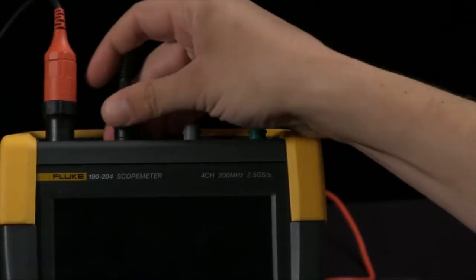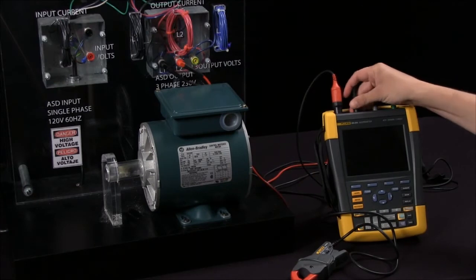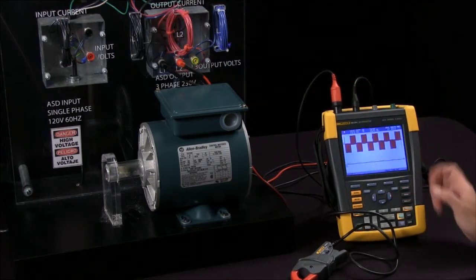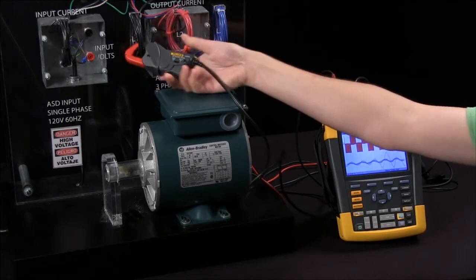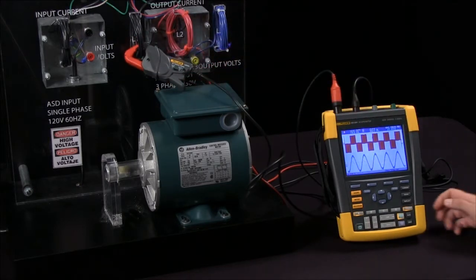So to connect I will just connect this to, in this example, the second input, and then I will take my clamp and I am going to hook it to my A phase of the output side of my drive.